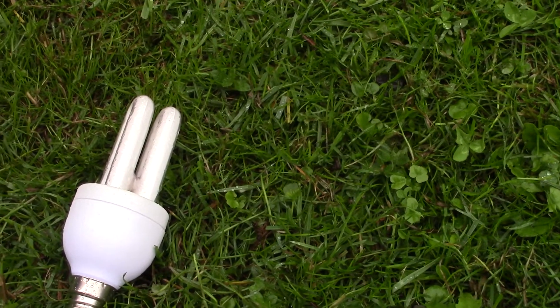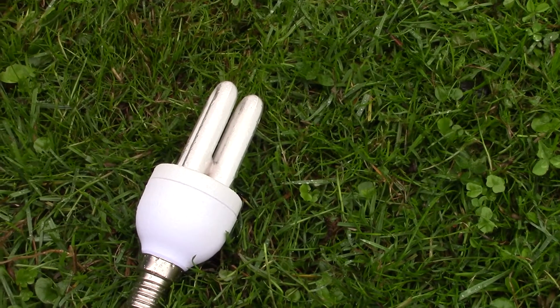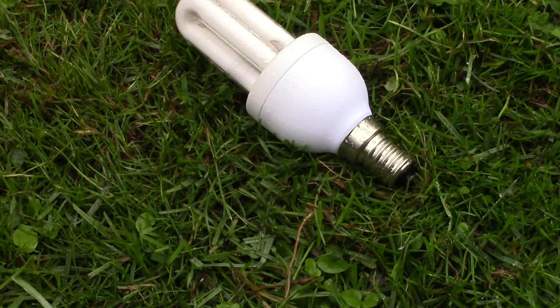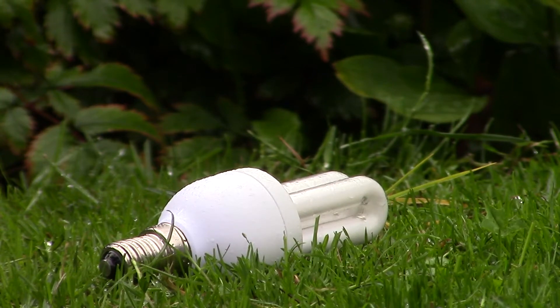Fluorescent lamps are about four times as efficient as old-fashioned incandescent light bulbs. And although LEDs are even more efficient, fluorescent lamps are still very common. But how do they actually work?